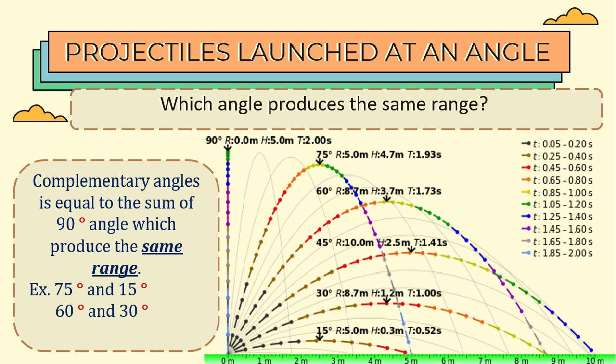Now, which angle produces the same range? Complementary angles is equal to the sum of 90 degrees angle, which produces the same range. Example, 75 degrees and 15 degrees. 75 plus 15, that is a total of 90 degrees. And based from this image, you would notice that they both have the range of 5 meters.